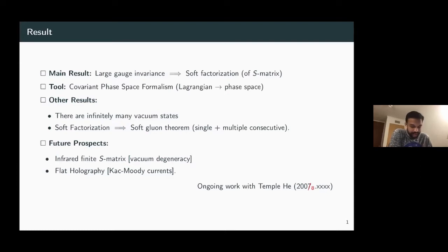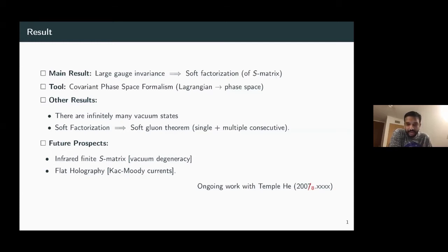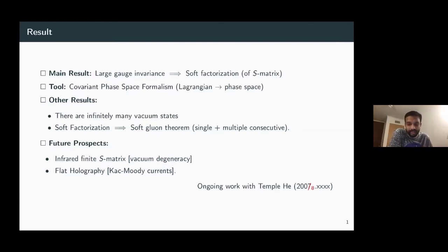The result at the level of the soft gluon theorem is interesting, but for future work it's far more interesting — we can start talking about infrared finite S-matrices. It'll be good to connect this to, for example, the work of Matthew Schwartz. More interestingly, it might give some insight to flat holography: the story will show that the dual theory of any gauge theory must necessarily contain some Kac-Moody currents, and it'll be important to understand the physics of these currents in the context of scattering amplitudes.